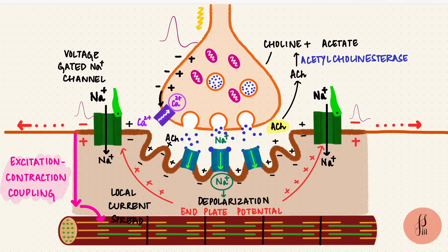The choline then gets taken up by the presynaptic terminal by a sodium-choline co-transporter, so it can be used to form more acetylcholine to be released when the next action potential arrives to start the process all over again.